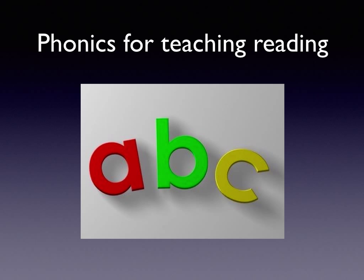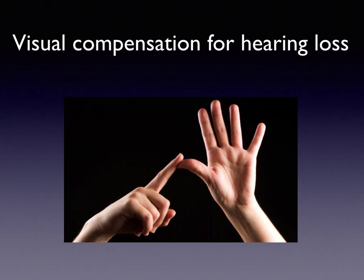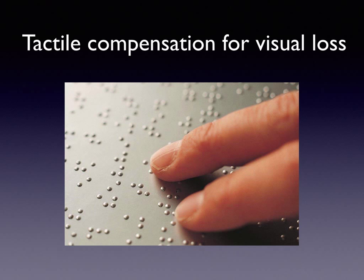Think about how we teach children to read using phonics — we use auditory information as well as physical demonstration of the letter action, at the same time as learning how the letter is written and how it looks. We can use vision to overcome language barriers — a universal sign for roadworks. We can use visual compensation for hearing loss through sign language. We can use tactile compensation for visual loss — this is Braille.